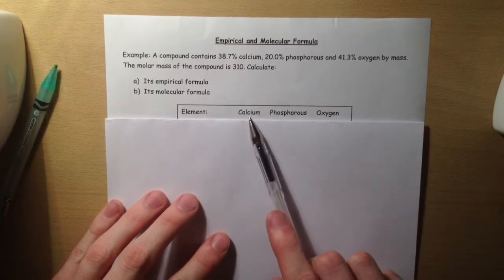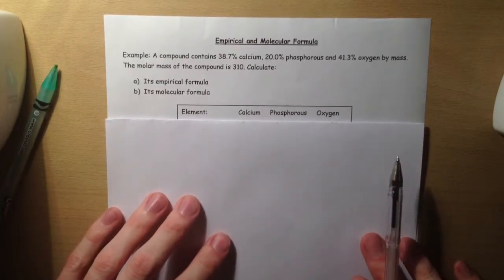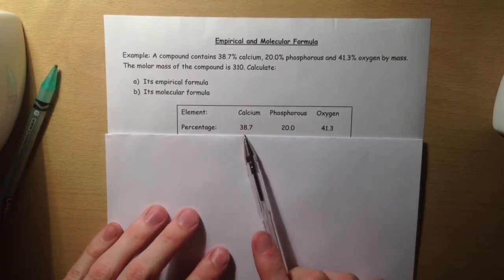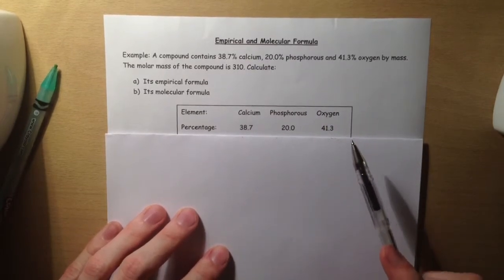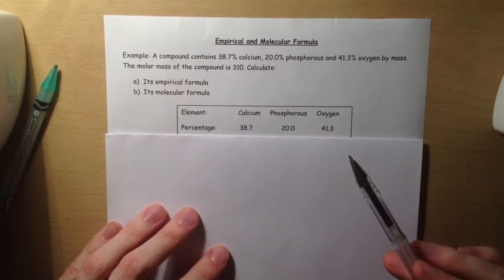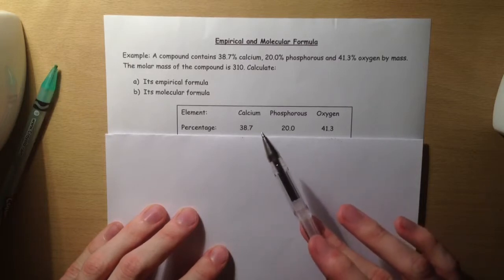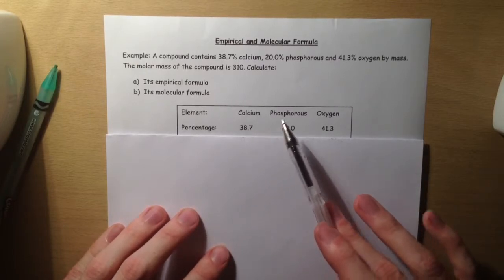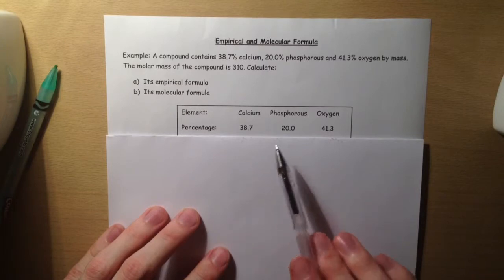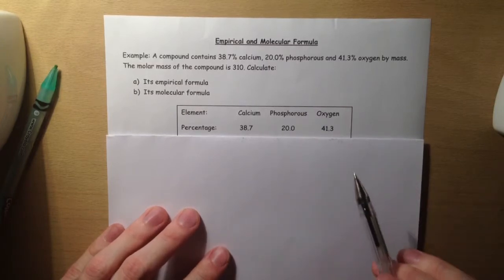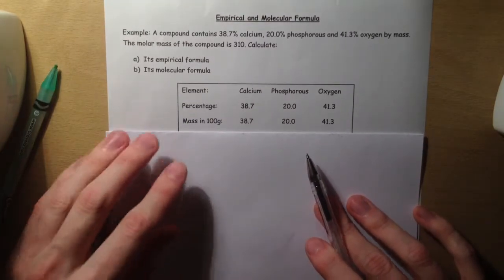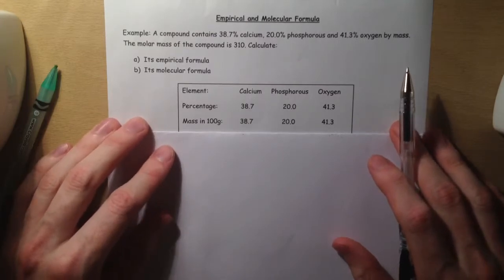The very first step is to identify what elements we have present: calcium, phosphorus, and oxygen. Next, identify how much of each we've got. We're told 38.7%, 20%, and 41.3%. A percentage is out of a hundred, and we need to get this into grams to use as a mass. If we had 100 grams of our compound, then 38.7 grams would be calcium, 20 grams phosphorus, and 41.3 grams oxygen.